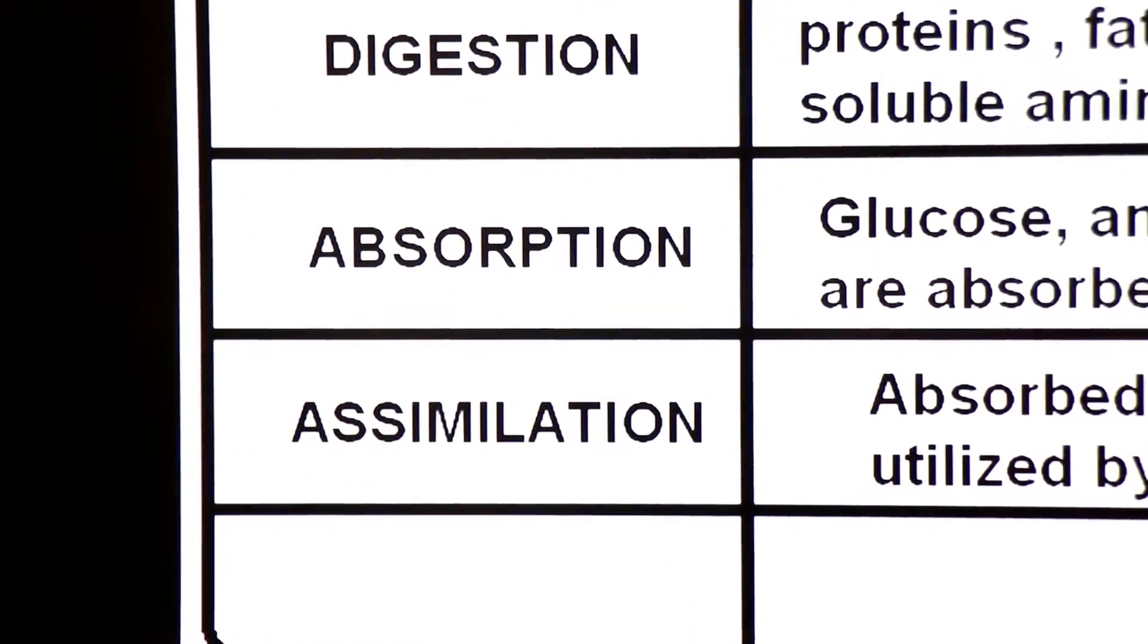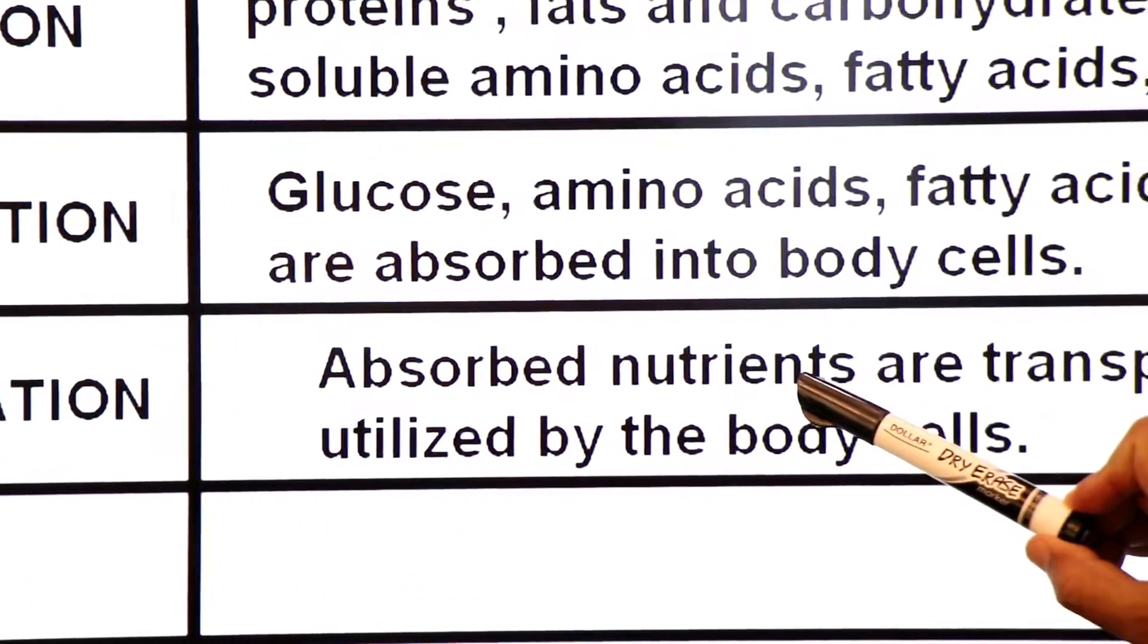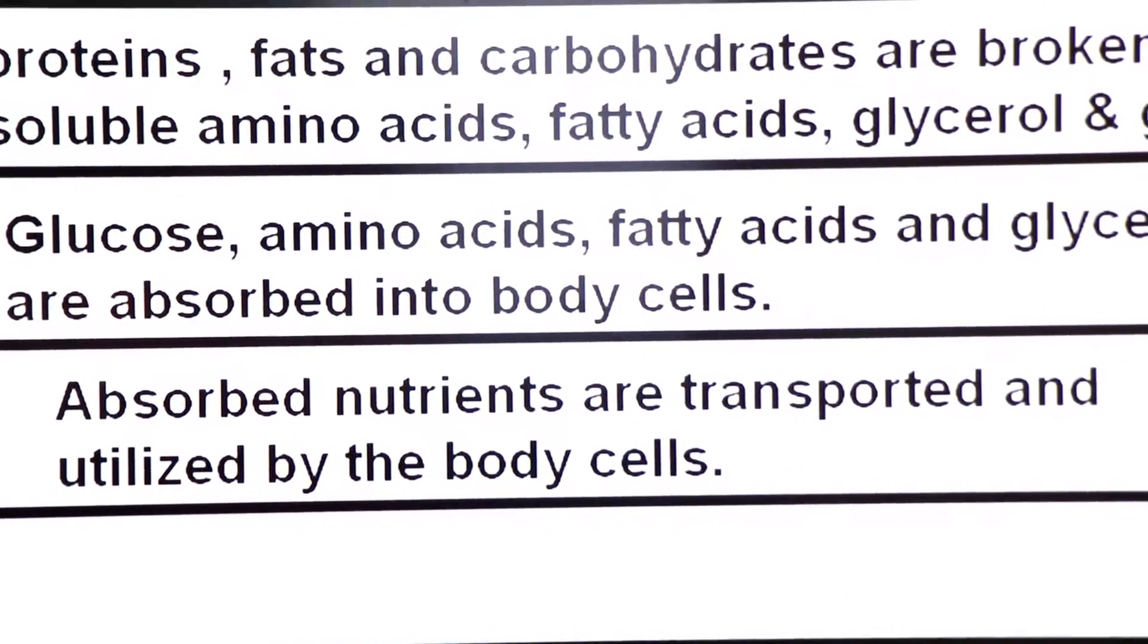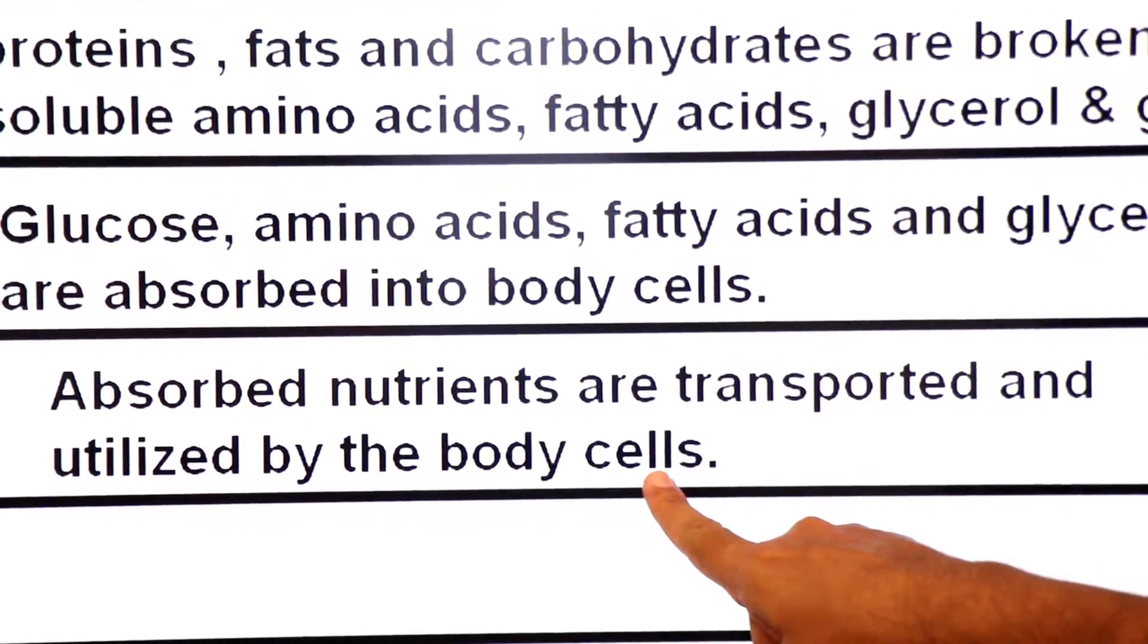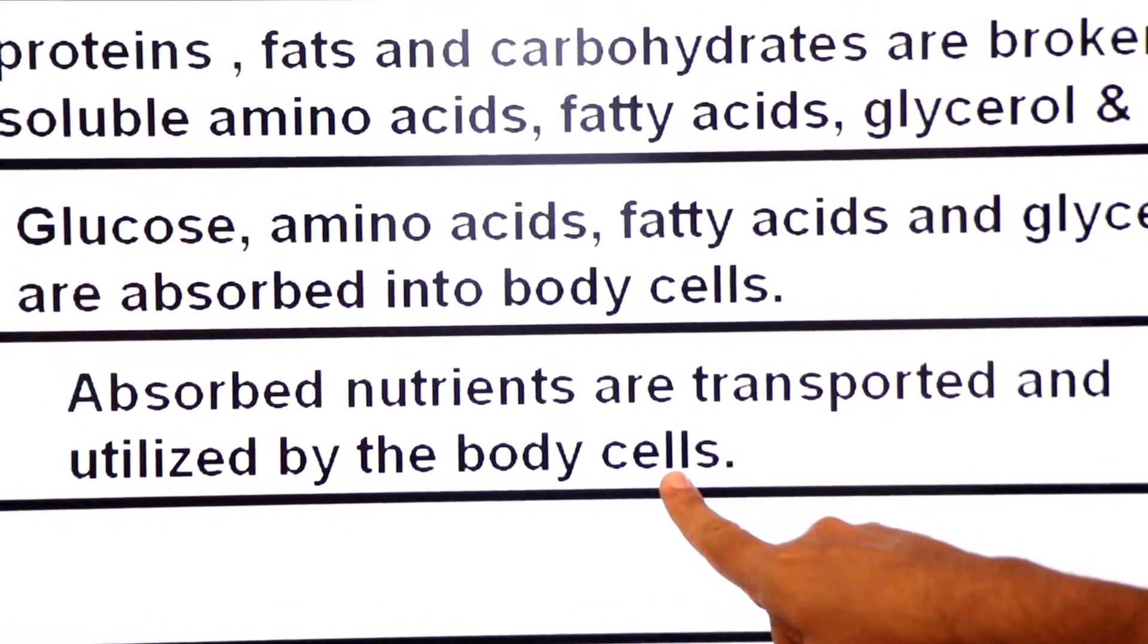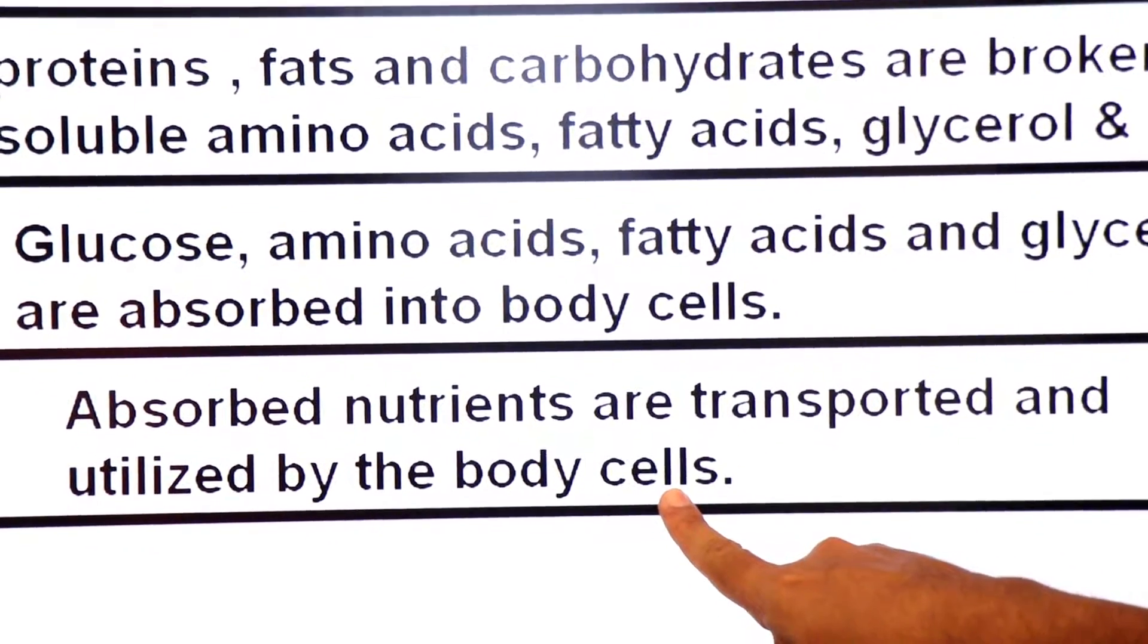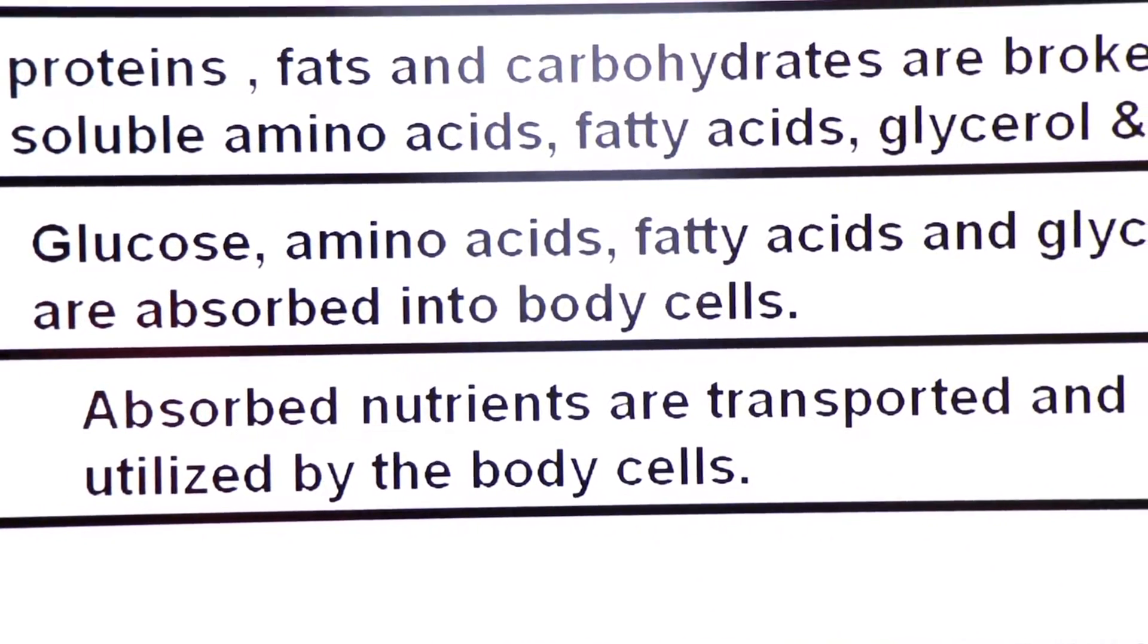What is assimilation? Absorbed nutrients, the end products are transported and utilized by the body cells. Body cells utilize amino acids, glycerol and glucose. This process is called assimilation.